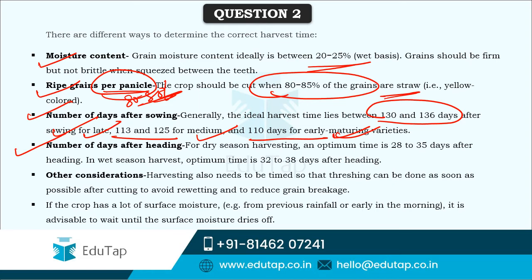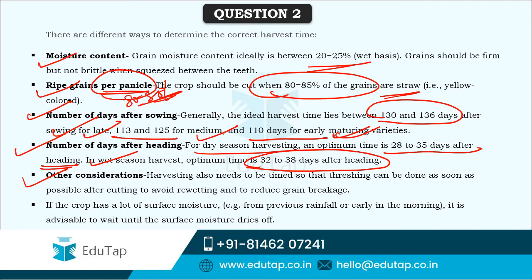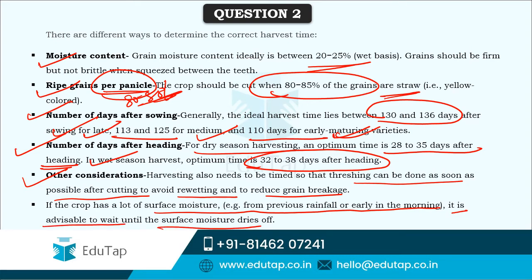For number of days after heading: in dry season harvesting, the optimum time is 28 to 35 days after heading, while in wet season harvest, the optimum time is 32 to 38 days after heading. These are various methods other than moisture content based on which we can time the harvest. Harvesting can also be timed so that threshing can be done as soon as possible after cutting to avoid re-wetting and to reduce grain breakage. If the crop has lot of surface moisture from previous rainfall or early morning, it is advisable to wait until the surface moisture dries off before harvesting.